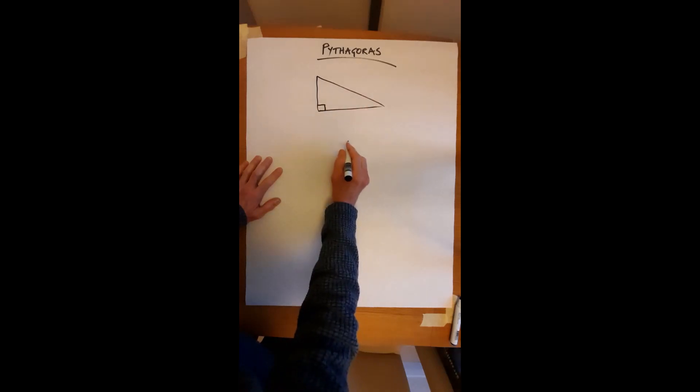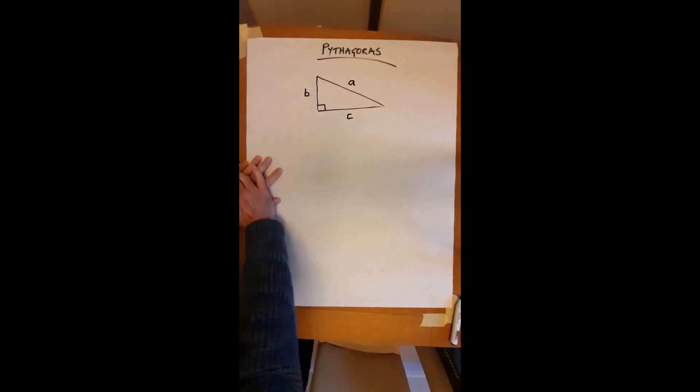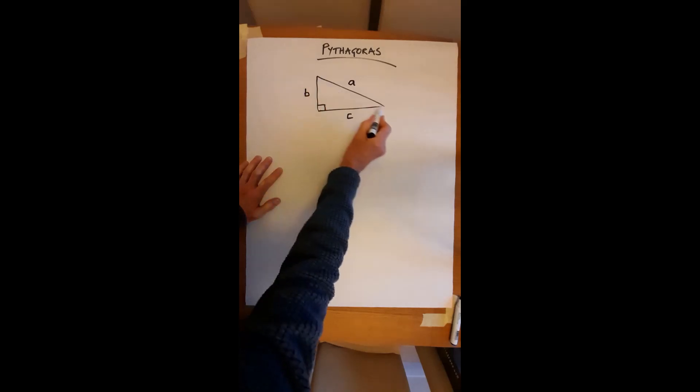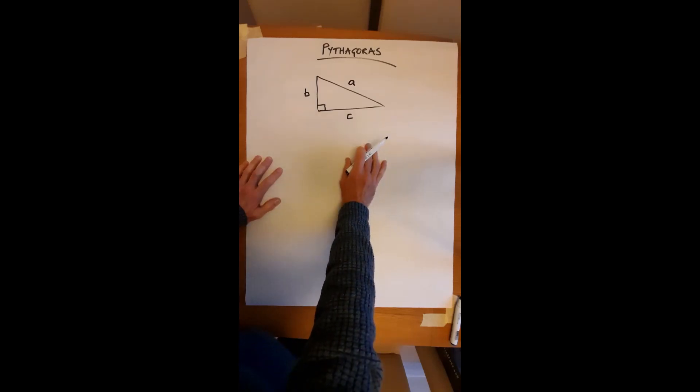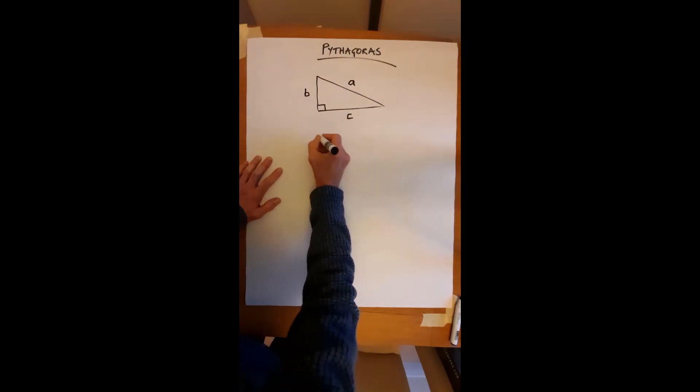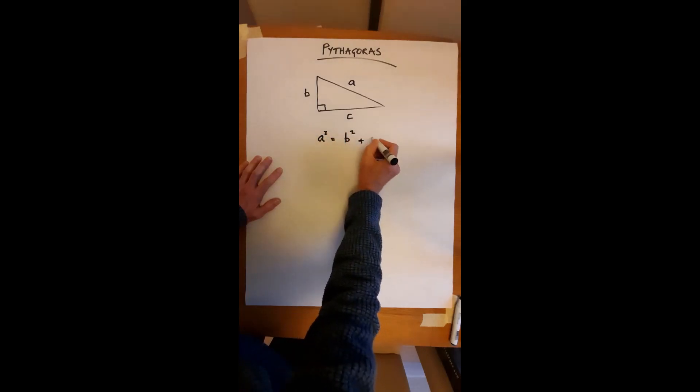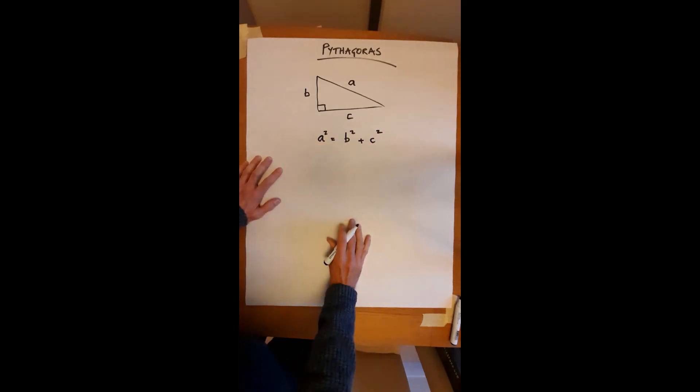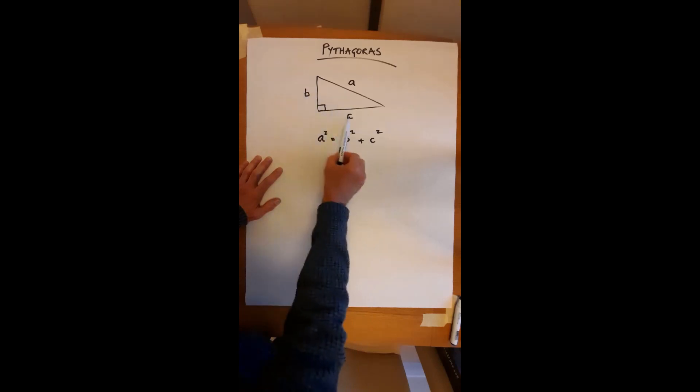So first of all, let's label up this triangle. I'm going to call this A, B, and C. The longest side of a right-angled triangle is called the hypotenuse, but I'm not going to worry about the technical names at the moment. So what Pythagoras said was that A squared equals B squared plus C squared. So you'll sometimes see this written as the square on the hypotenuse, so that squared, is equal to the sum of the squares of the other two sides. So B squared plus C squared.